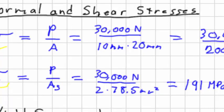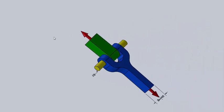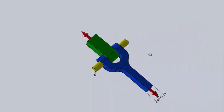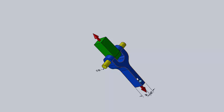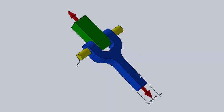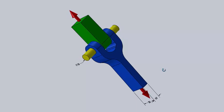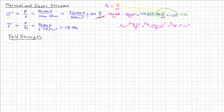In the first part we had a clevis and a pin and a tang here that were set up with dimensions and forces on either end. We were able to calculate the normal stress of 150 MPa and the shear stress on the pin of 191 MPa.